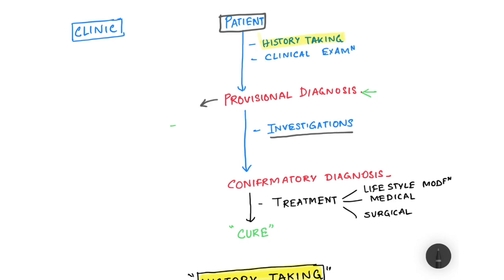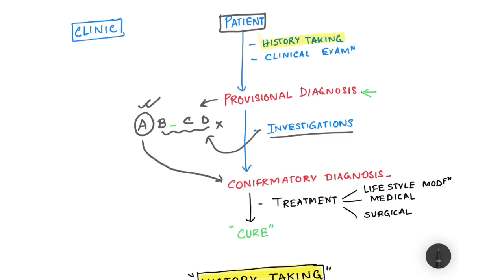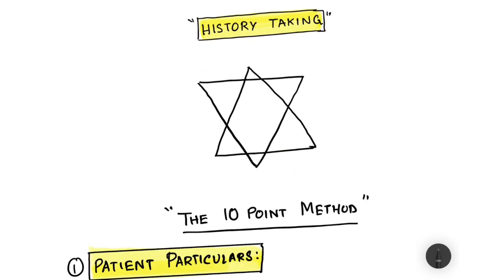To make it simple: suppose you get four provisional diagnoses — A, B, C, and D — and based on the investigations you find that B, C, and D are not the case, so by elimination you arrive at A as the confirmatory diagnosis. Once you have the confirmatory diagnosis, you treat the patient through lifestyle modification, medications, or surgery. Sometimes due to shortage of time or grave situations, we start treatment right away with the provisional diagnosis — that is known as empirical treatment.